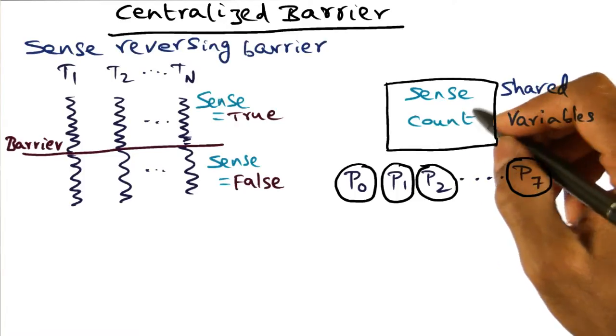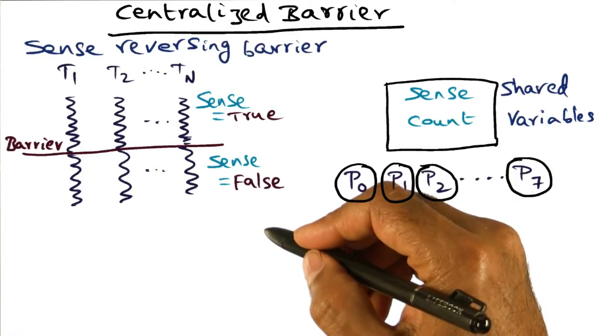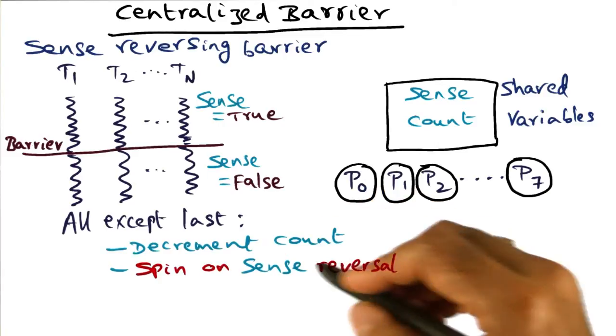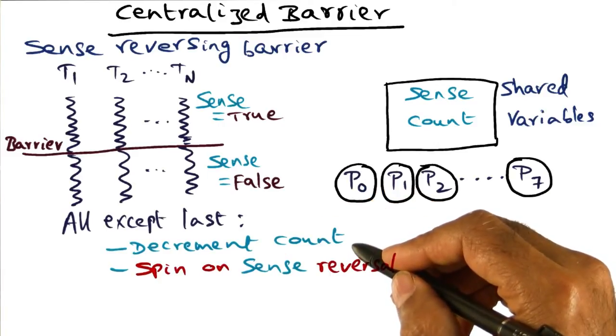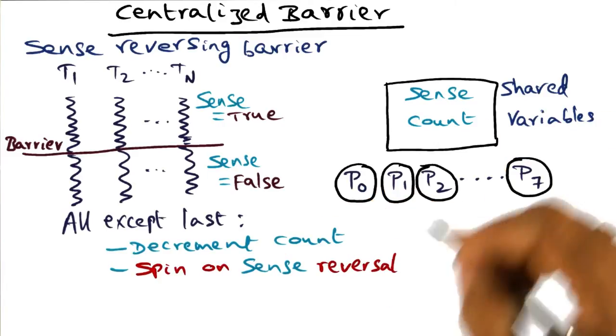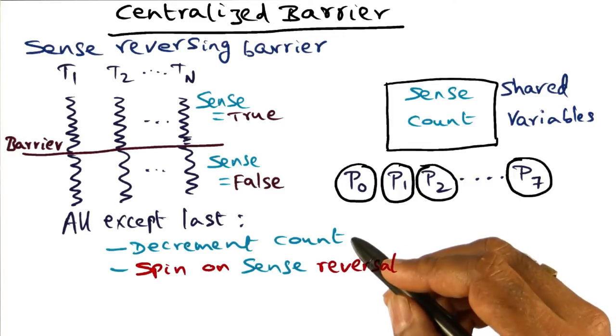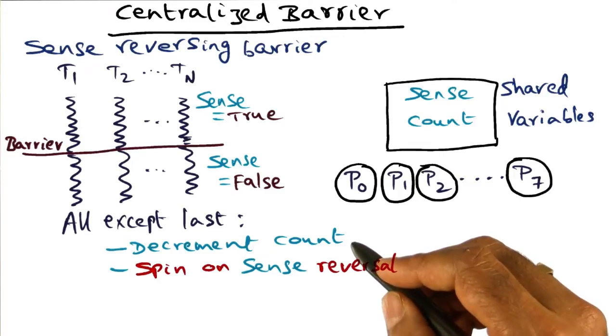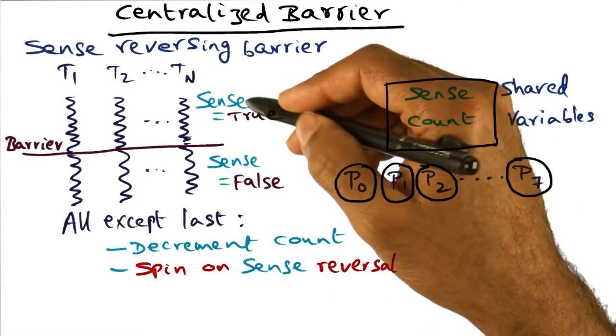So the barrier algorithm is going to work like this. When a thread arrives at a barrier, it decrements the count, exactly like in the counting barrier. But after it decrements the count, it is going to spin on sense reversal.